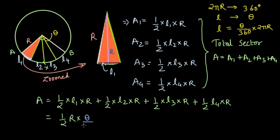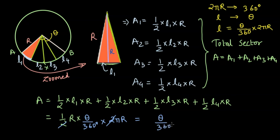Substituting L into the area formula, we get Area = ½ × R × (theta / 360°) × 2πR. Simplifying, the 2s cancel and we are left with Area = (theta / 360°) × π × R², which is the area of the sector.